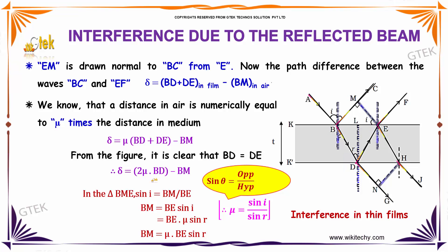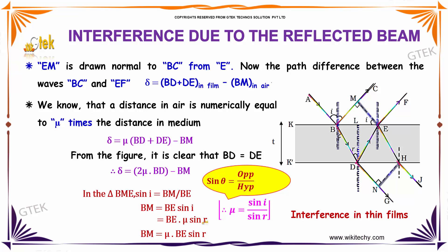So it is 2 into mu into BD minus BM. In triangle BME, sin i equals BM divided by BE, the hypotenuse. By Snell's law, sin i equals mu into sin r, since nu equals sin i divided by sin r. This gives BM equal to mu into BE into sin r.